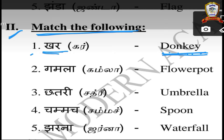Second one: Gamla, G-A-M-L-A, Gamla. Gamla means flower pot — F-L-O-W-E-R P-O-T, flower pot.